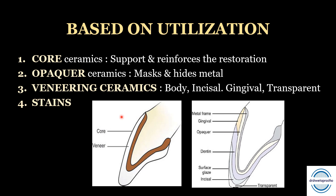Next are stains — these are used to color the ceramics to simulate brown staining or white lines seen on natural teeth, thereby improving aesthetics. Fifth are the glazes — the surface glaze imparts a smooth, glossy surface to the restoration.